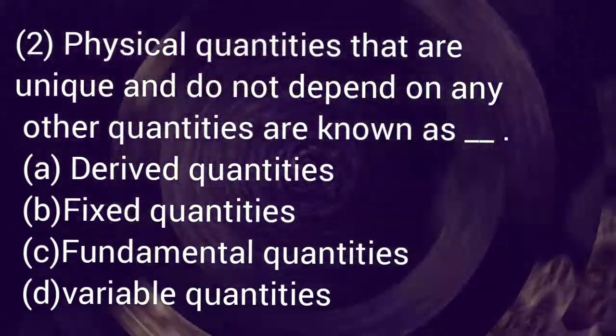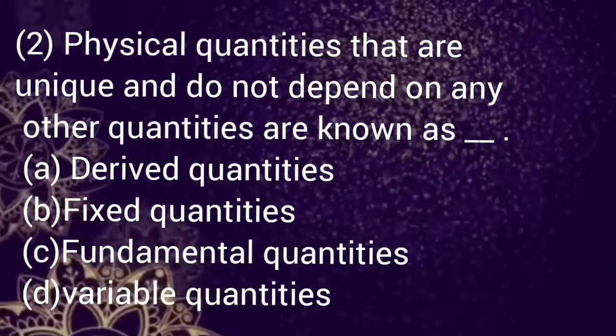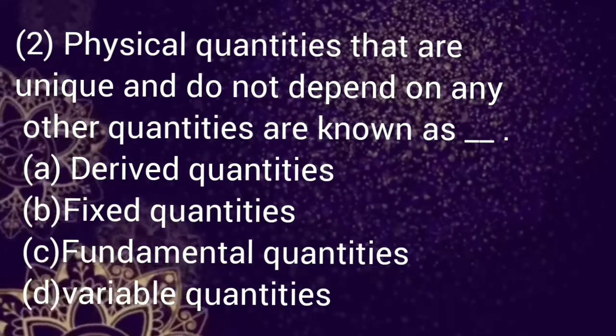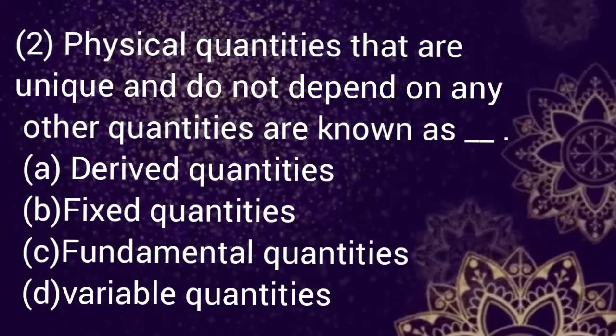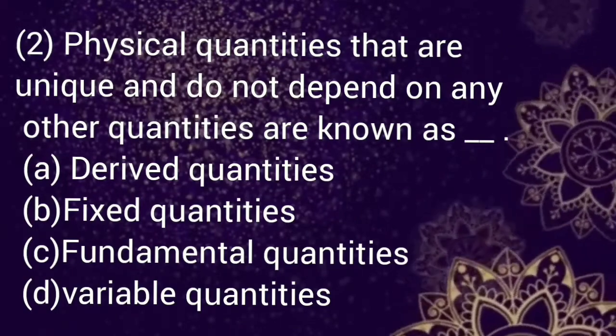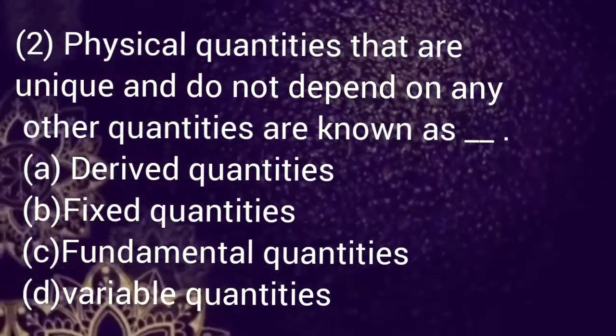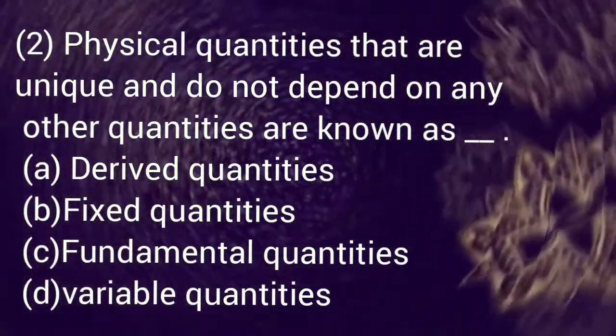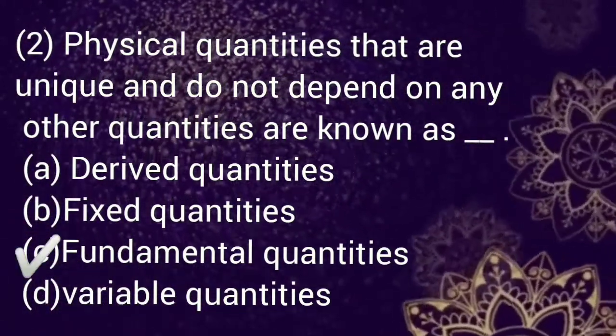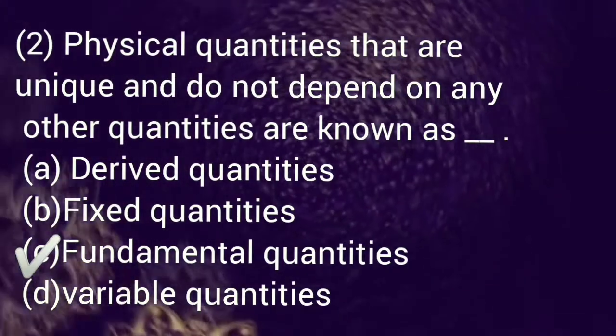Physical quantities that are unique and do not depend on any other quantities are known as: Option a: derived quantities, b: fixed quantities, c: fundamental quantities, d: variable quantities. Select your answer. Correct option is c, fundamental quantities.